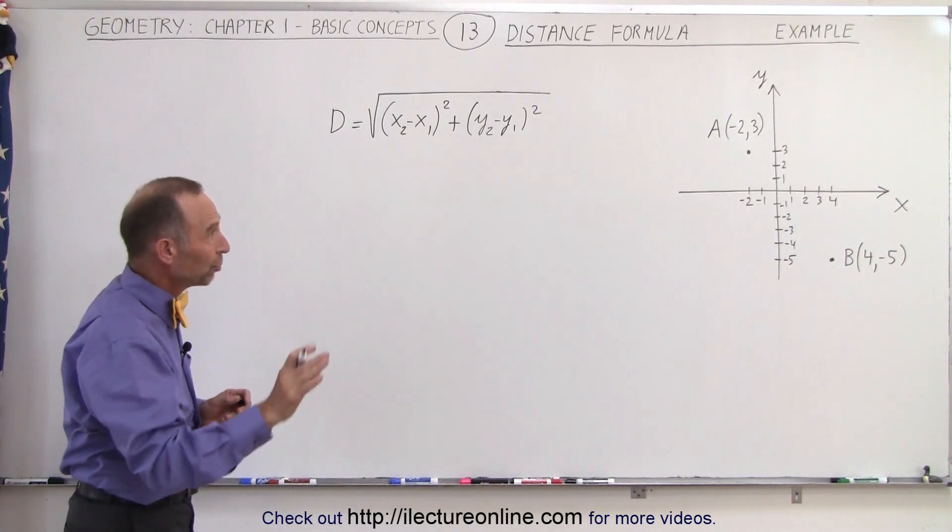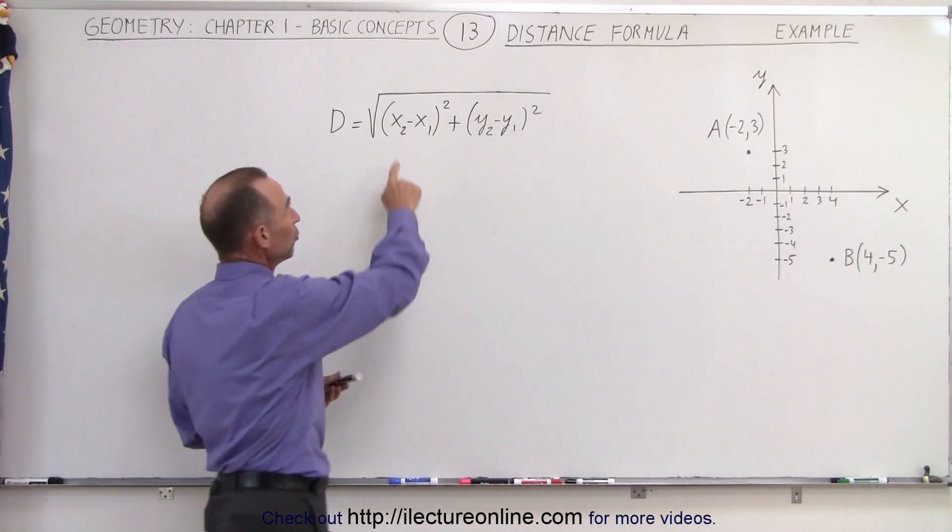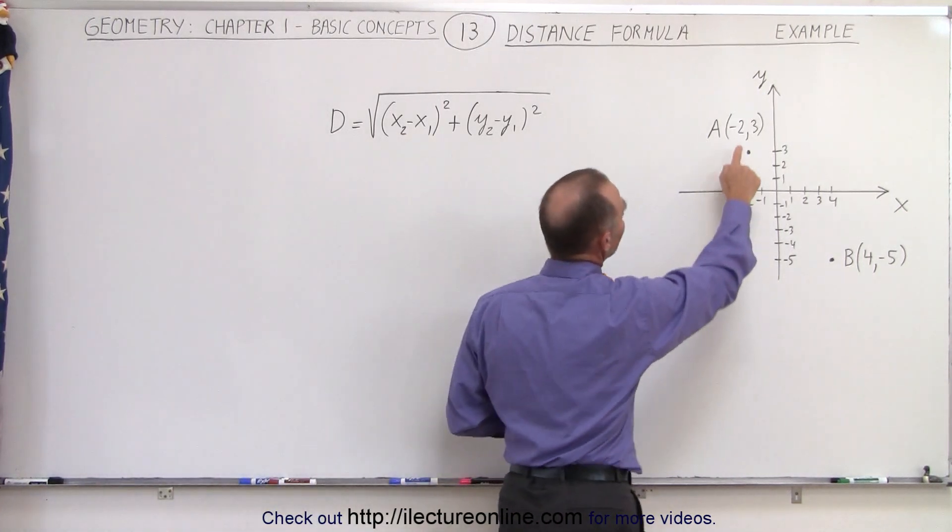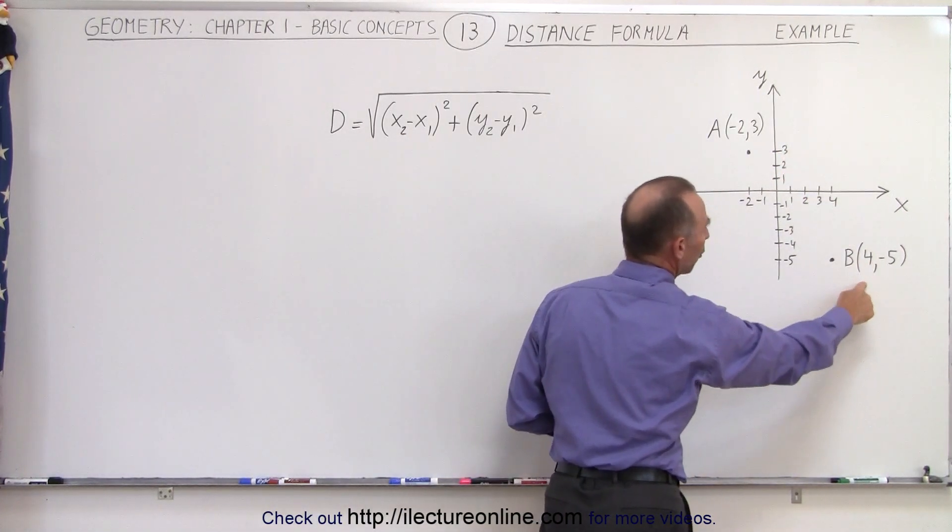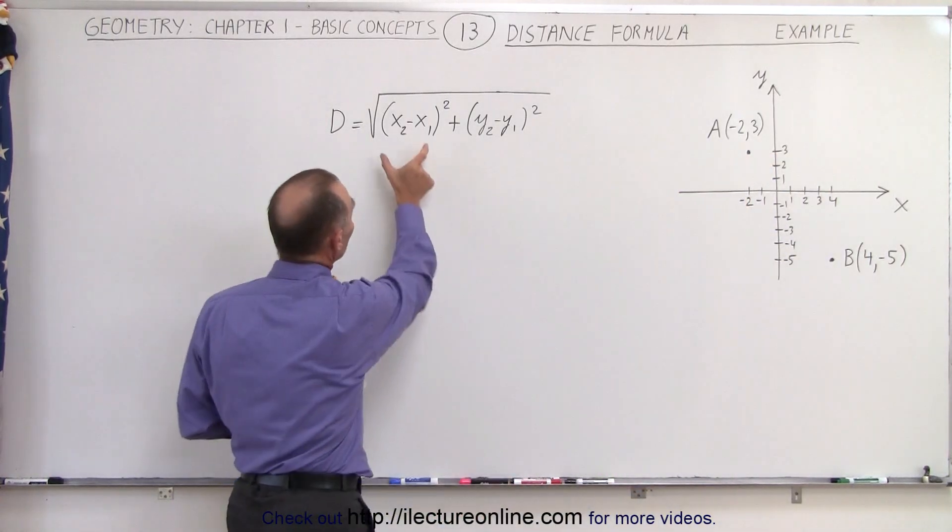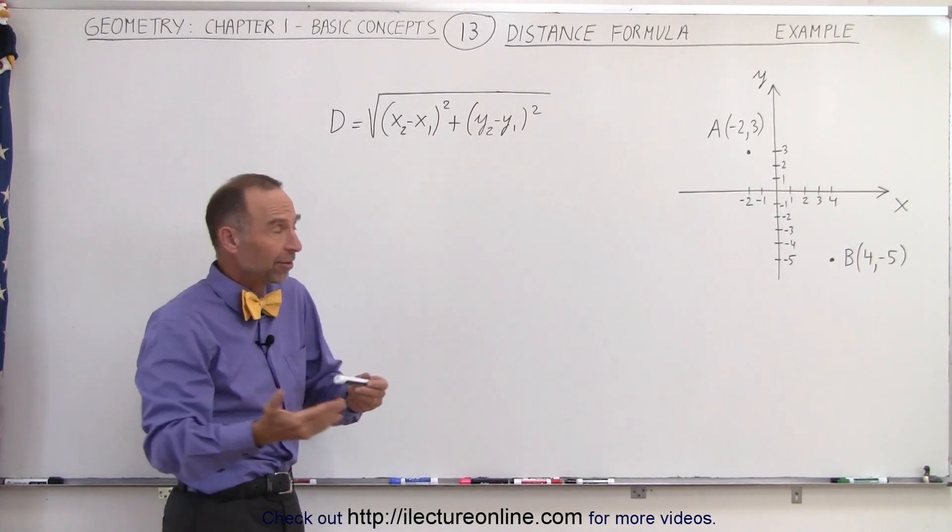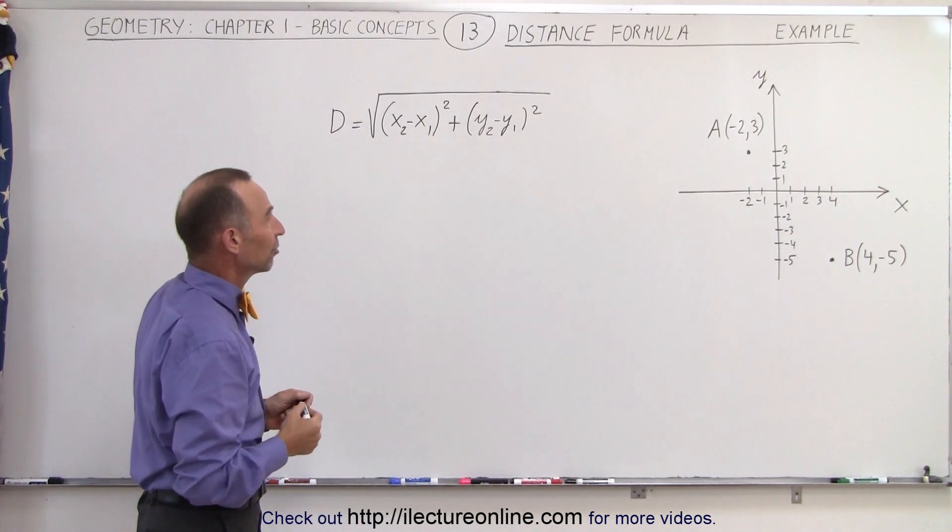Now it really doesn't matter which point we call 1 and which point we call 2. So for x2 minus x1 we can write negative 2 minus 4 or we can write 4 minus negative 2. It really makes no difference at all because we're going to square the difference in each case. So if you end up with the negative instead of the positive, you square it, the negative disappears anyway.